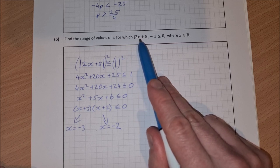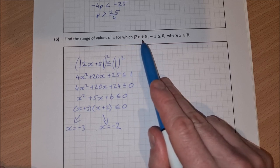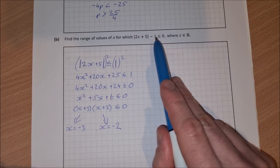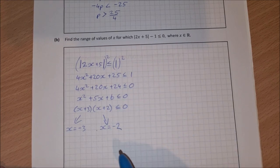Absolute value of minus 1 is 1. 1 minus 1 is less than or equal to 0. So that's true.